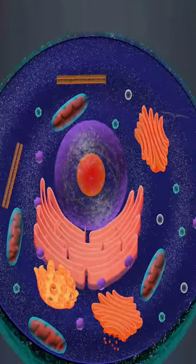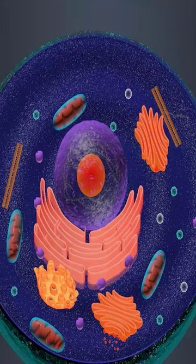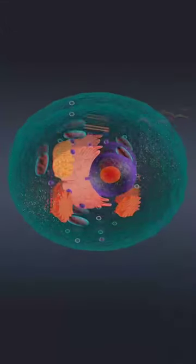Before cell division, the centrosome duplicates and then as division begins, the two centrosomes move to opposite ends of the cell.